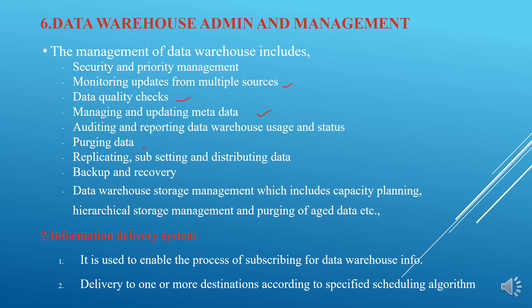The information delivery system, the seventh component, enables the process of subscribing for data warehouse information delivery to one or more destinations according to a specified scheduling algorithm. It is used to transform and deliver data from the data warehouse to an application based on the destination and the type of scheduling algorithm used. This concludes the discussion of the seven components of data warehouse.